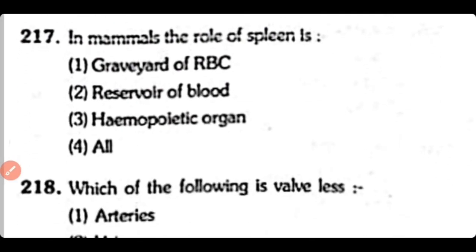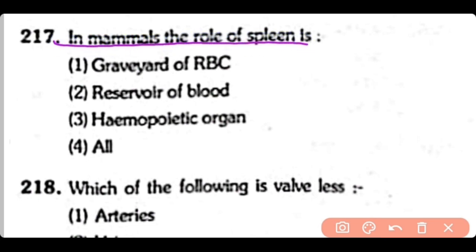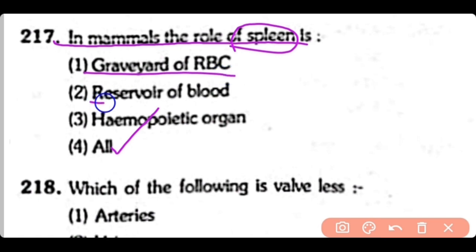Q217. In mammals, the role of the spleen is to act as a graveyard of red blood cells, as a reservoir of blood, and as a hemopoietic organ. So the correct answer is Option 4 — the spleen is the graveyard of red blood cells, stores blood, and is a hemopoietic organ where blood cells are synthesized.